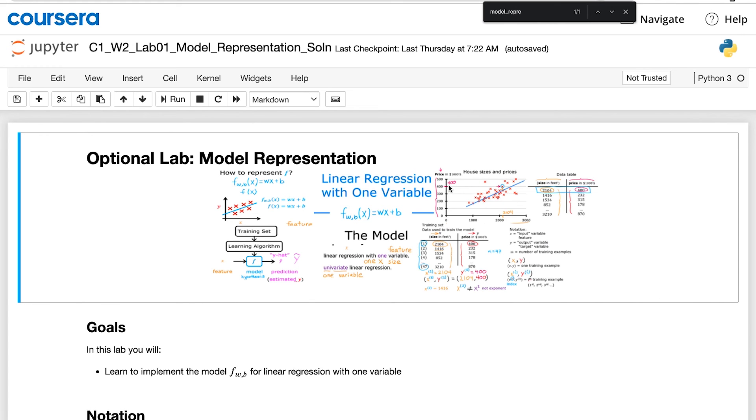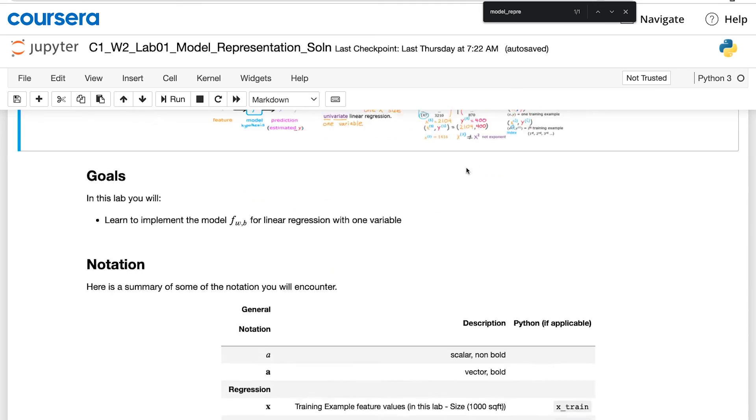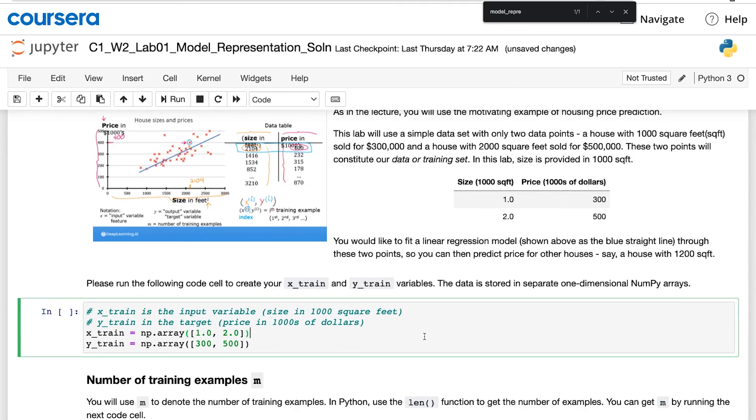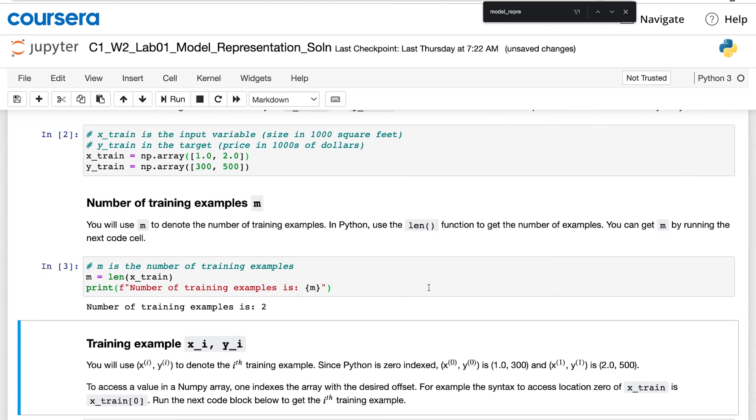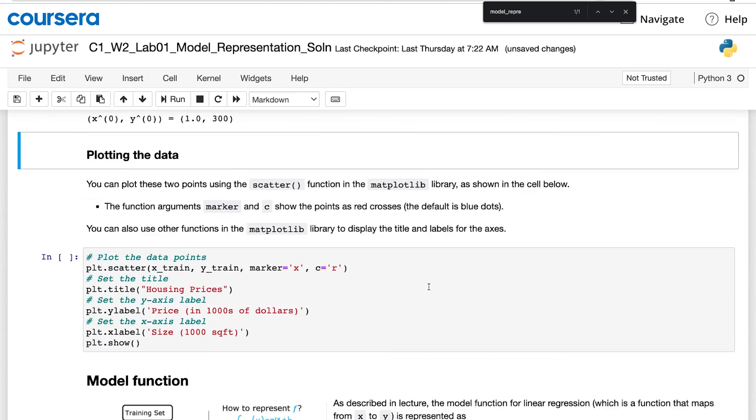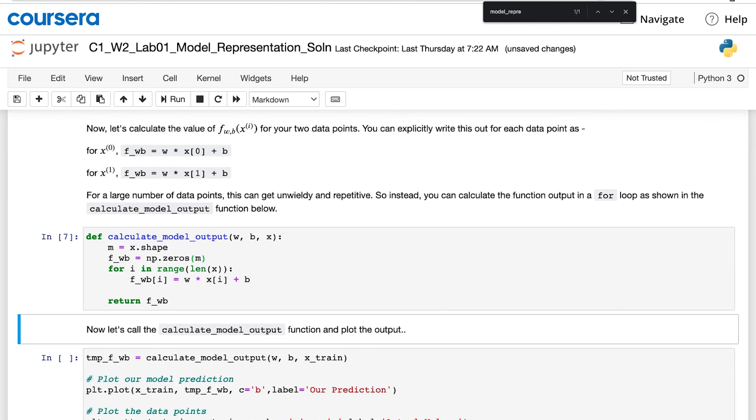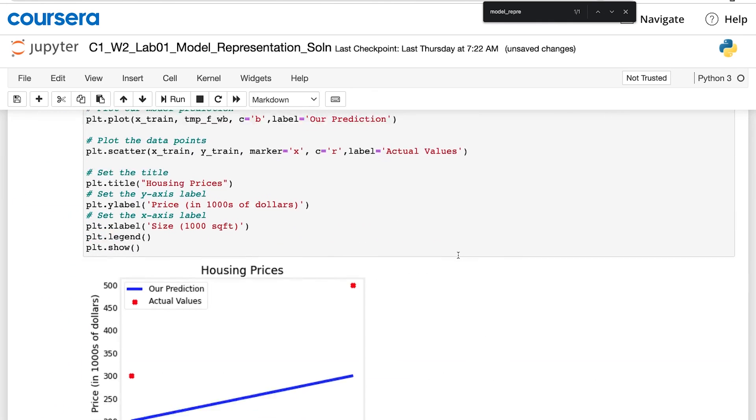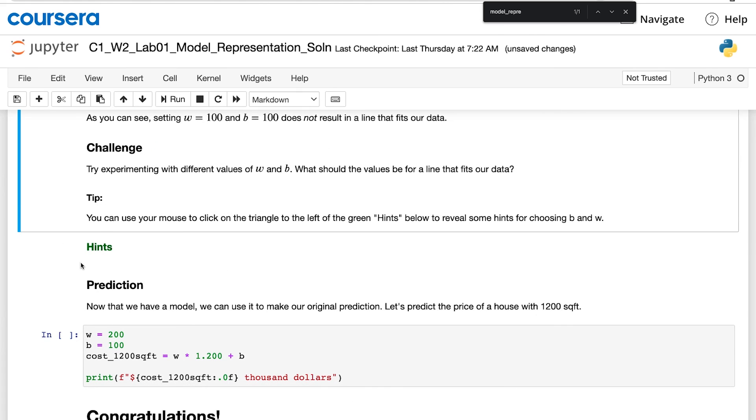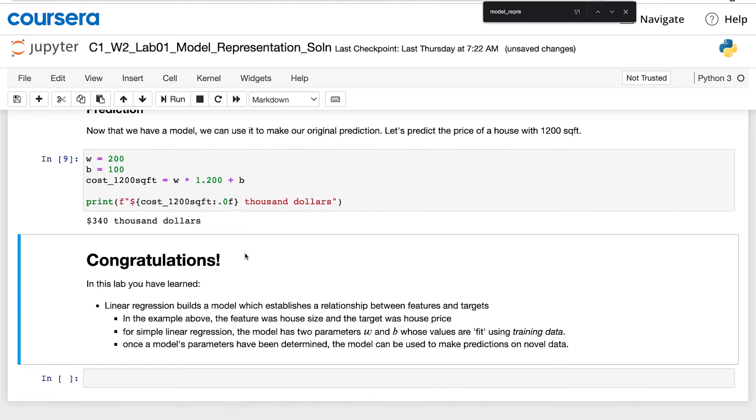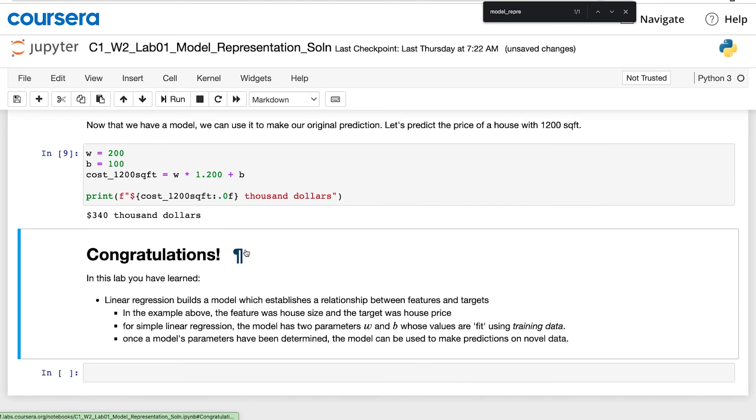And by the way, when you're done with this video, there is another optional lab. You don't need to write any code. Just review it, run the code and see what it does. That will show you how to define in Python a straight line function. And the lab will let you choose the values of w and b to try to fit the training data. You don't have to do the lab if you don't want to, but I hope you play with it when you're done watching this video. So that's linear regression.